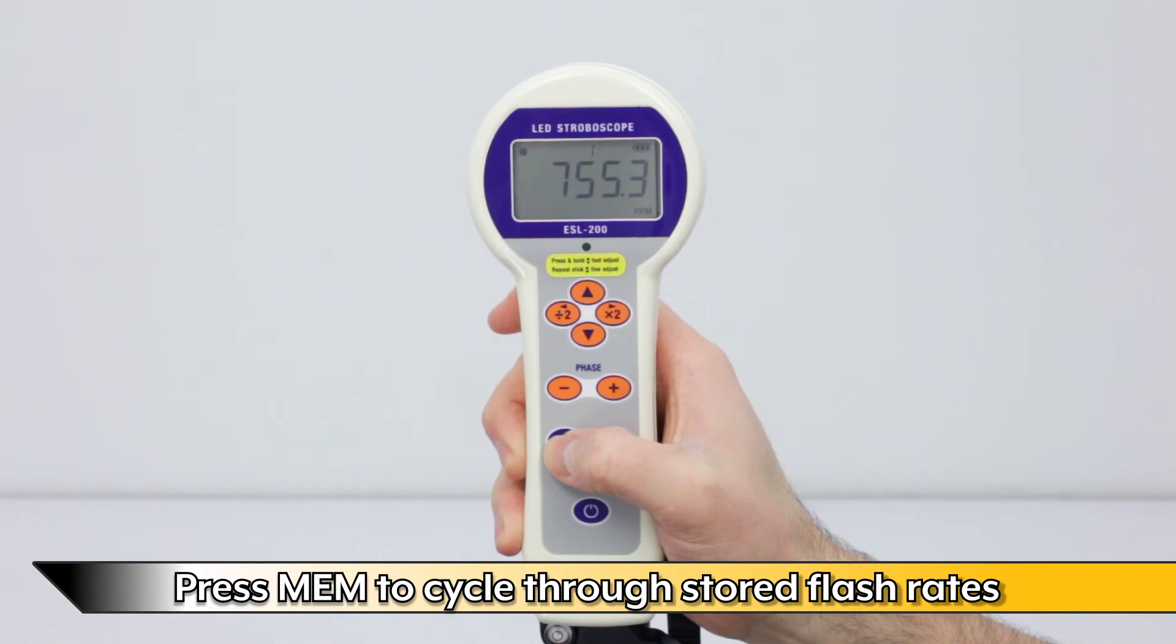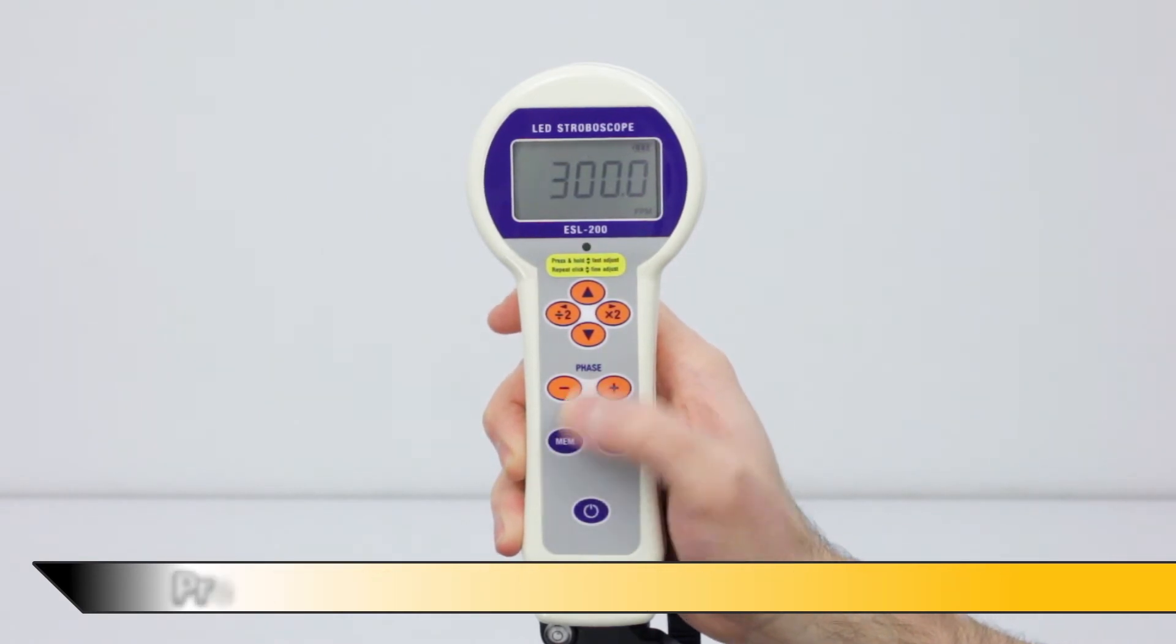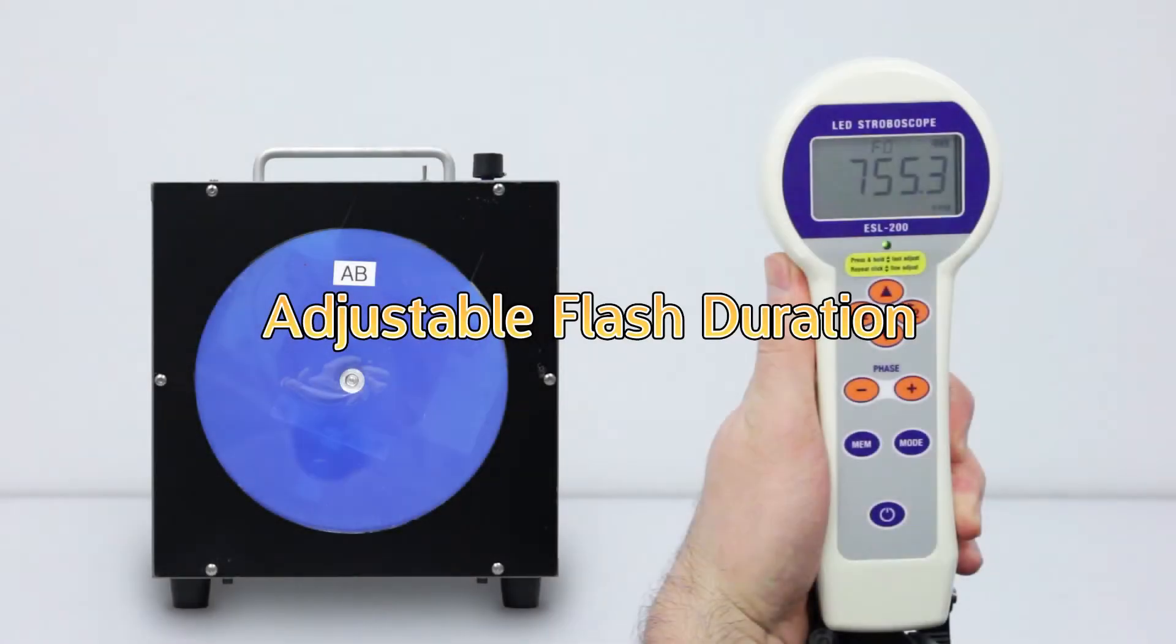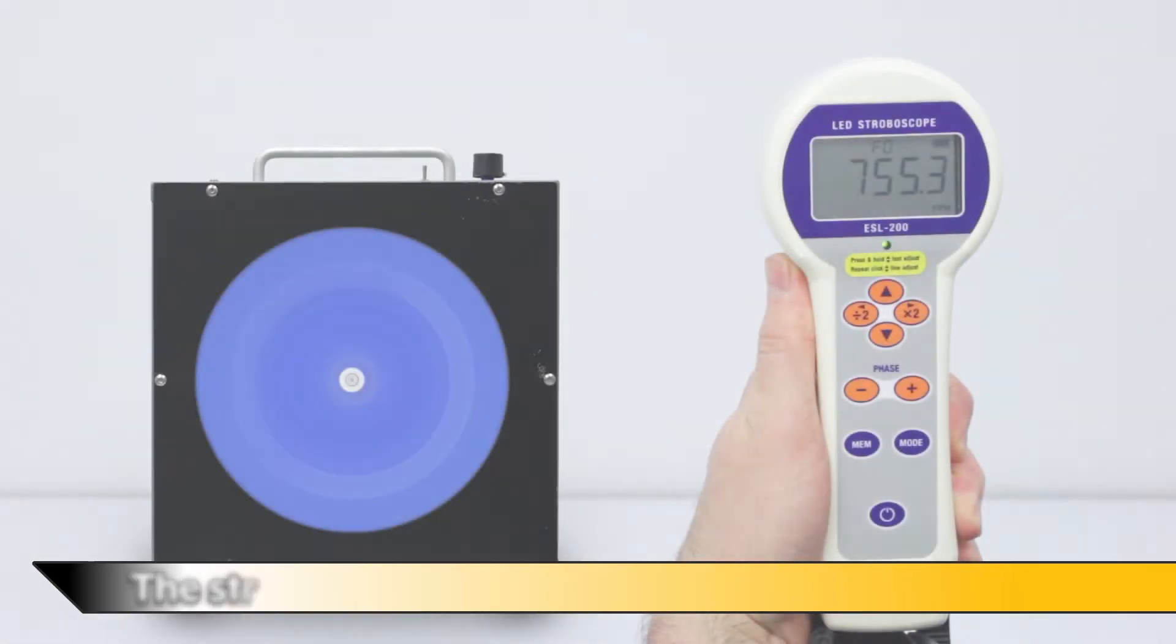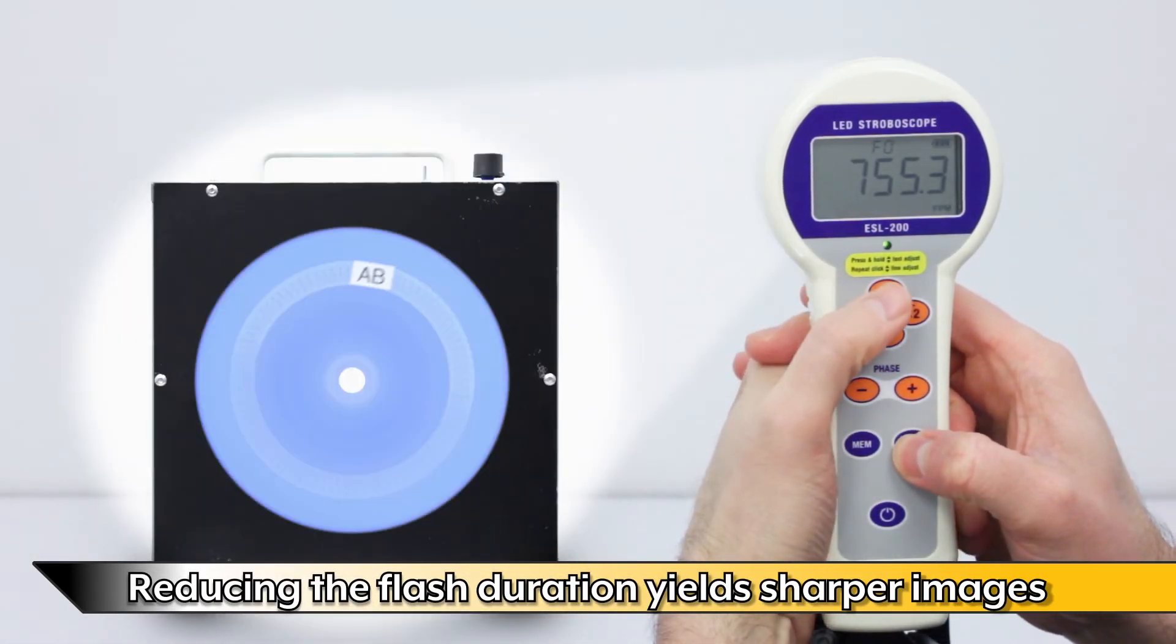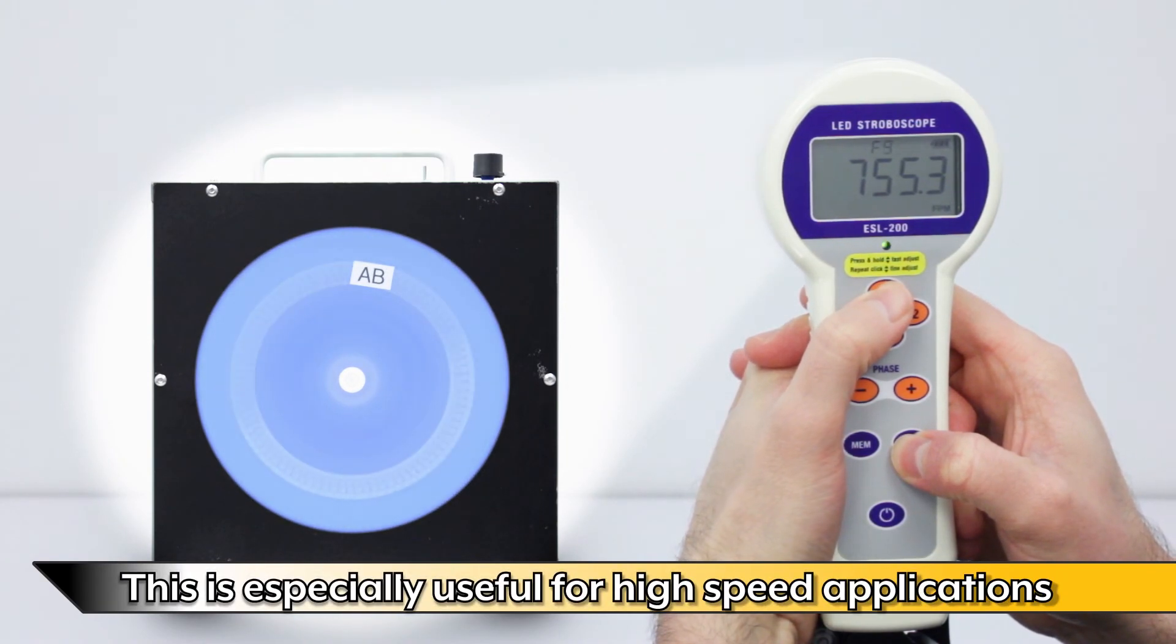The stroboscope features an adjustable flash rate. Reducing the flash duration yields sharper images. This is especially useful for high-speed applications.